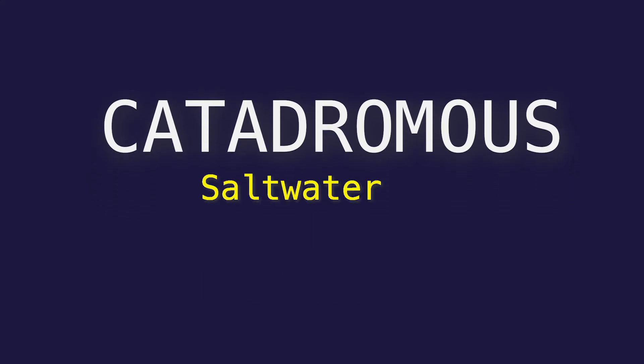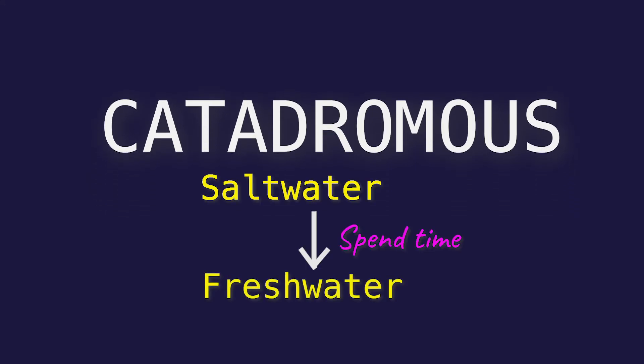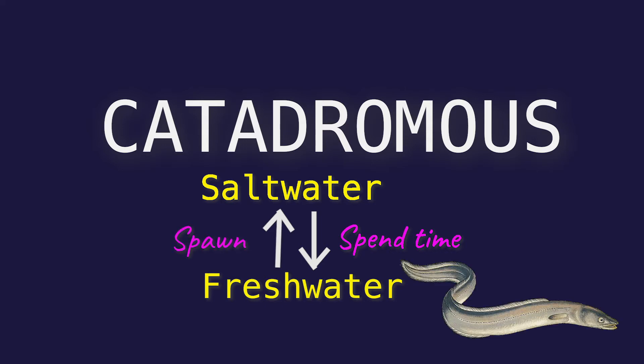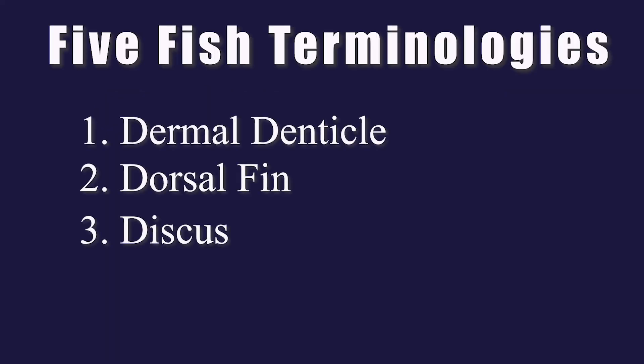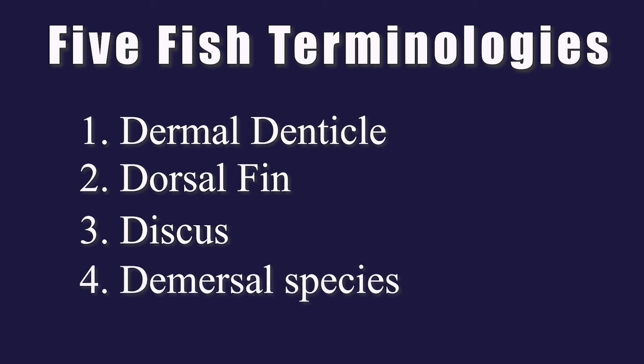Catadromous is the other way around — these fish are born in salt water, migrate to fresh water, and then return to salt water to reproduce. Eels are the best known group belonging to the catadromous category.